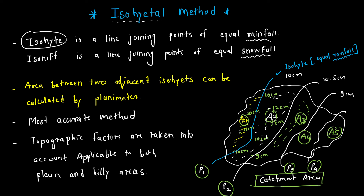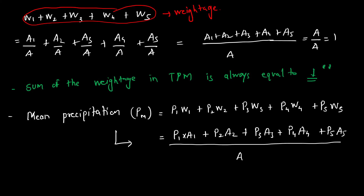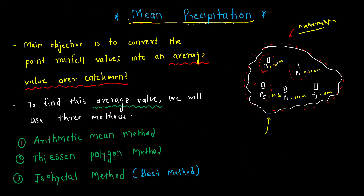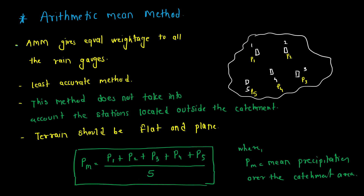With this we have completed the mean precipitation topic covering all three methods. Among them, the isohyetal method is the best. For plain areas, all three methods can be used, but for hilly areas only the isohyetal method is applicable. The arithmetic mean method simply averages all rain gauge station values — it is the least accurate method.